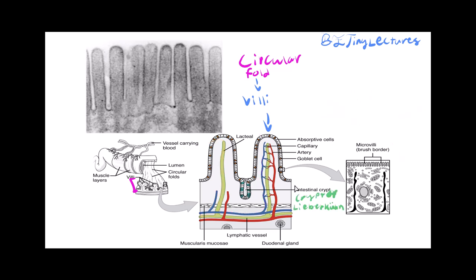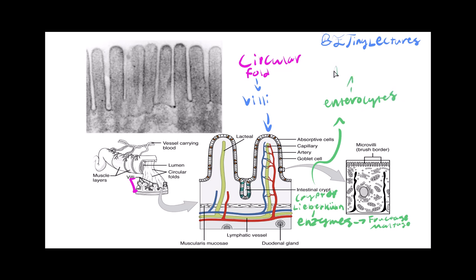In the middle of the villi there is an intestinal crypt called the crypt of Lieberkühn, which excretes enzymes such as fructase and maltase that break down carbohydrates into fructose and maltose. These crypts are filled with enterocytes — absorptive cells that help absorb nutrients from the chyme and secrete all these enzymes.